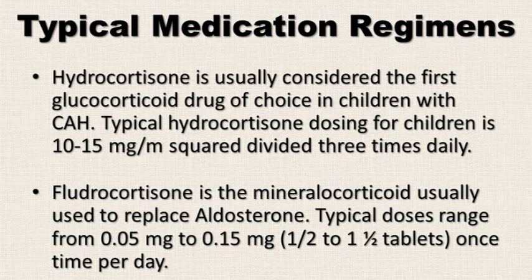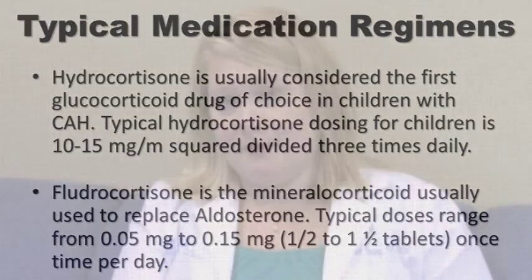Fludrocortisone is the mineralocorticoid usually used to replace aldosterone. Typical doses range from 0.05 milligrams to 0.15 milligrams — or half a tablet to one and a half tablets — every day. When we refer to stress dosing later in the video, that is solely of hydrocortisone. Regardless of your child's condition on a given day, the fludrocortisone dose remains the same.